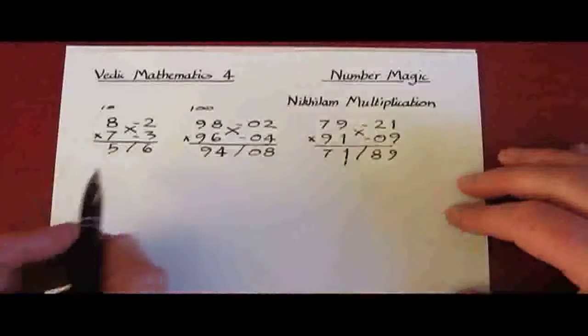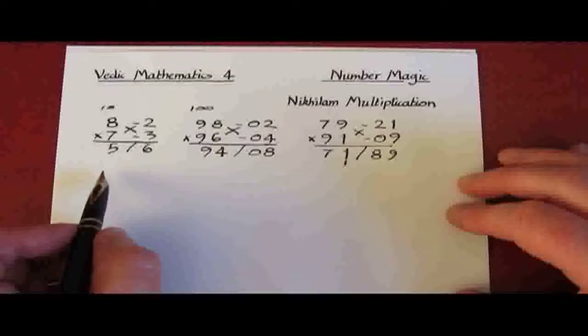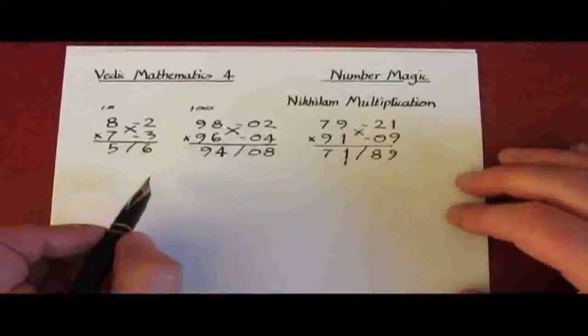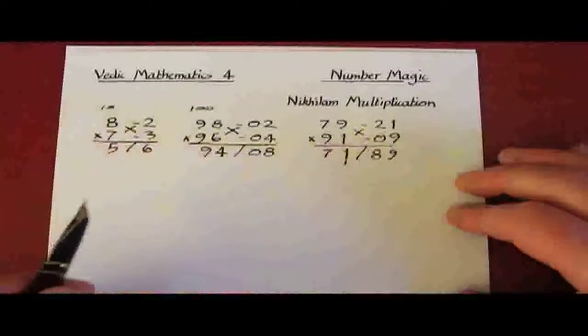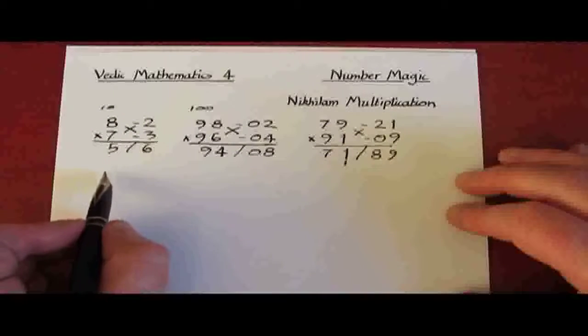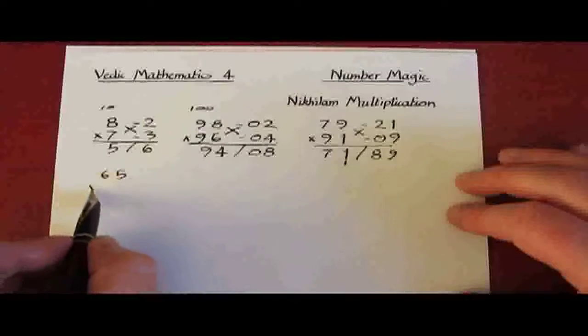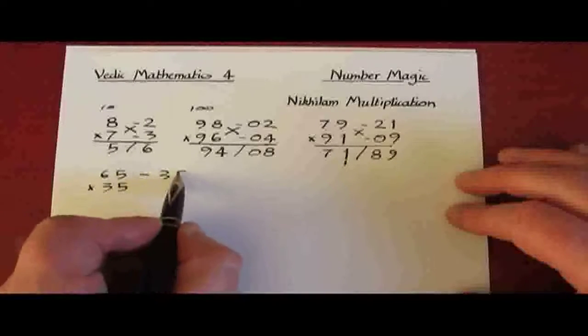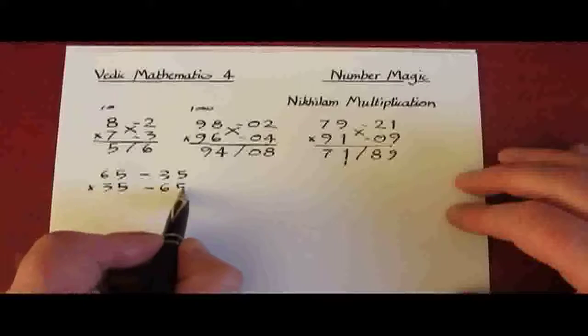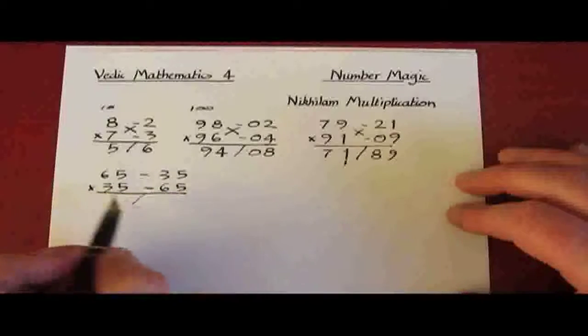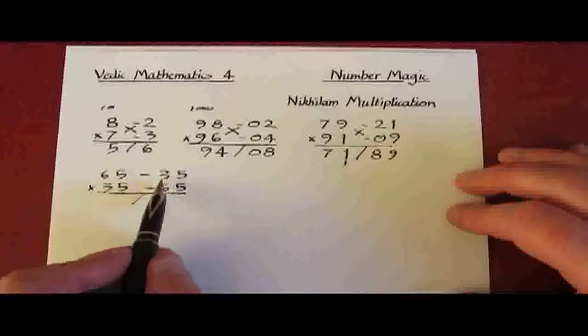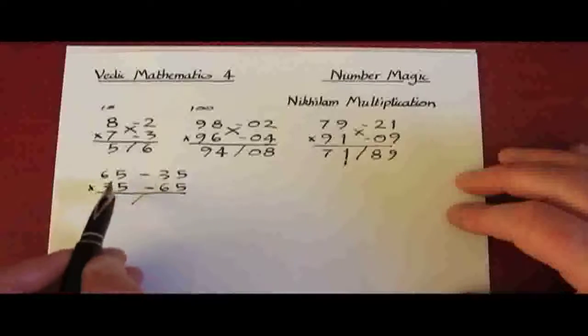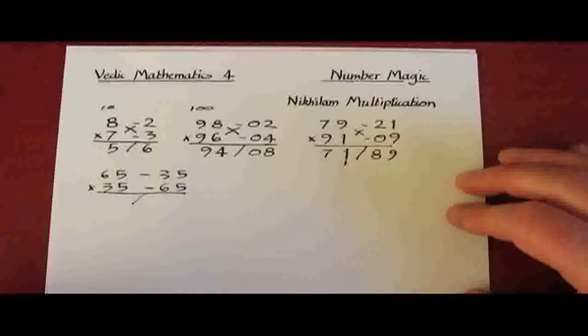But this is a special method, and if the numbers are sufficiently far away from the base then the multiplication on the right becomes awkward. Here's another example: 65 times 35. Let's have a look and see what happens here, because the deficiencies are 35 and 65. And now for the right-hand part we have to multiply 35 and 65, which is exactly what we started with. And so there's no advantage to this system here.